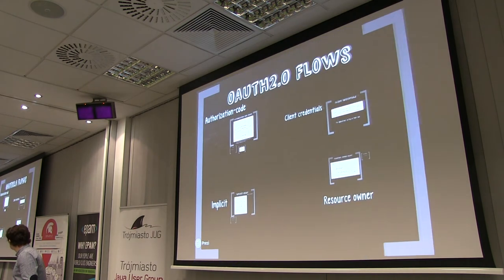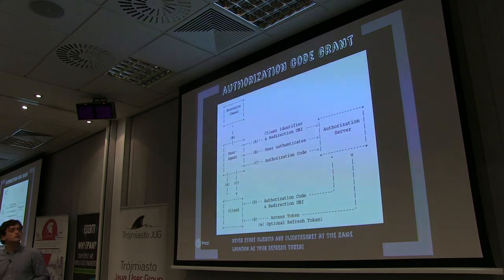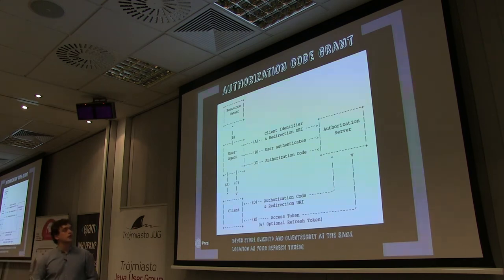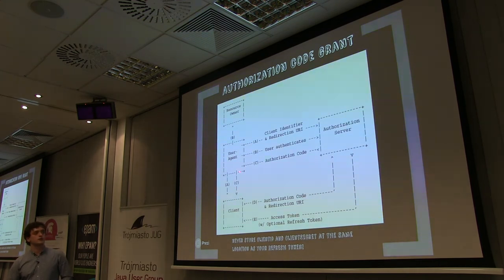There are four flows defined by the protocol. The first and most secure is the Authorization Code Flow, intended for server-side clients. The resource owner, via a user agent (the browser), wants to access protected resources. If the user is not logged in, the client redirects the user to the authorization server, which presents a login page where the user inputs credentials.